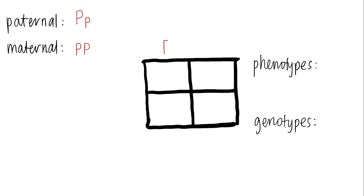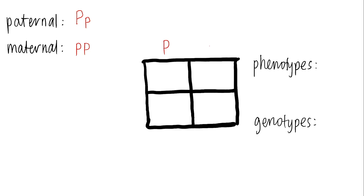We can put these into our Punnett square with paternal alleles on top and maternal alleles on the side. Then all you have to do is fill in the blanks — you take one allele from each parent, and this will tell you the allele pairing for each of the children.